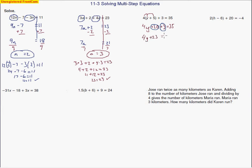After those last two steps, I've made it into a two-step equation. I'm going to solve by doing opposite operations. I'm taking 23 away from the left-hand side, so I have to do the same to the right-hand side. Now I have 4y equals 12. Dividing by 4 on both sides gives me y equal to 3.